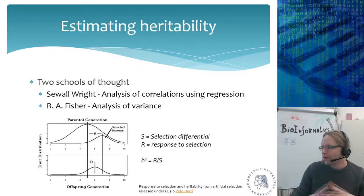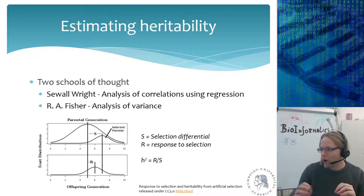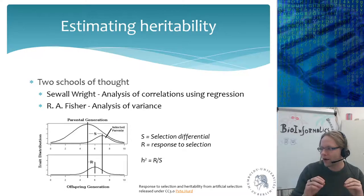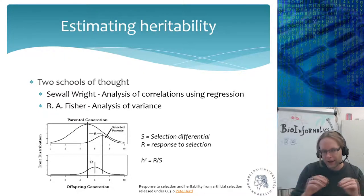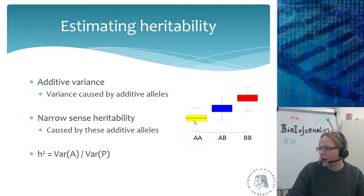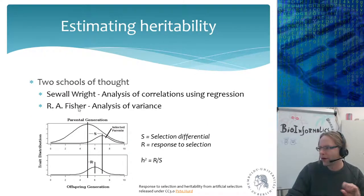If you want to estimate heritability, there are two schools of thought. Sewell Wright's school is to analyze correlations using regression — you have the total variance, calculate the correlation, and then look at the variance explained by the correlation. If you have a single marker and split individuals, instead of doing ANOVA you draw a single straight line and how well the line correlates with the data gives you the heritability. Then Ronald Fisher said you should calculate heritability using analysis of variance, ANOVA, which is slightly different.